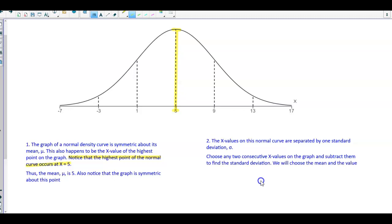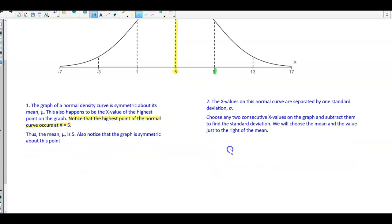We will choose the mean and the value just to the right of the mean. Since we have the mean at 5, we're going to look at the number 9, which is just to the right of the mean. We're going to take 9 and subtract 5, and what we get is the value of 4. Therefore, the standard deviation is equal to 4.